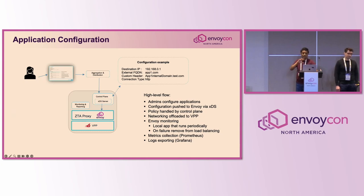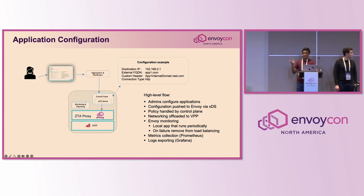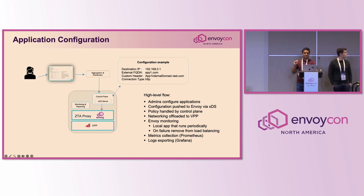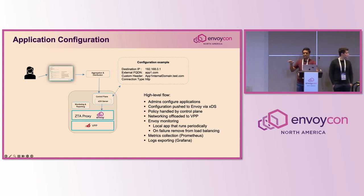Admin gets access to our dashboard and configures: the destination application's private IP address, the unique external URL, any custom headers, and the connection type — whether HTTP, RDP, or SSH. Once configured, these settings are pushed to the proxy node. A control plane component reads this configuration, converts it to XDS, and pushes it into Envoy, which is then aware of all applications along with their configuration.